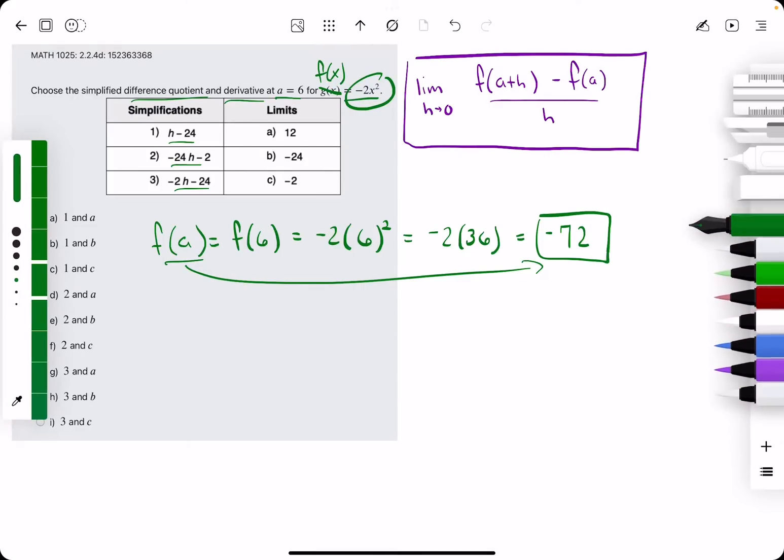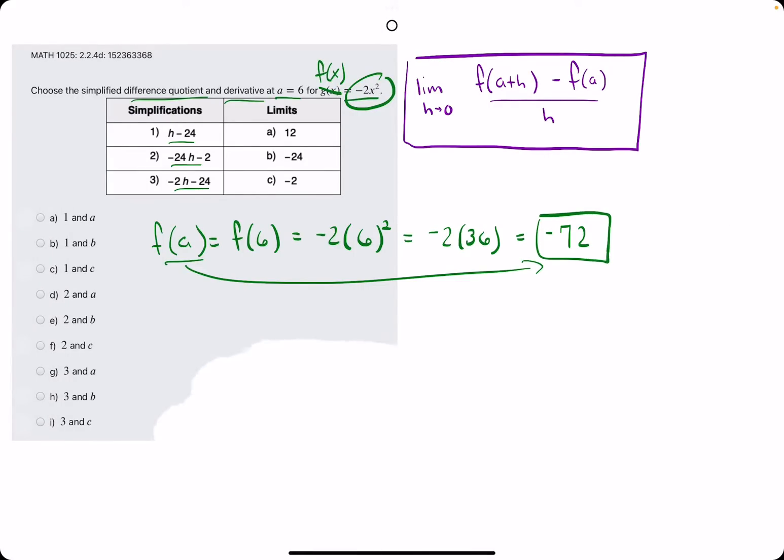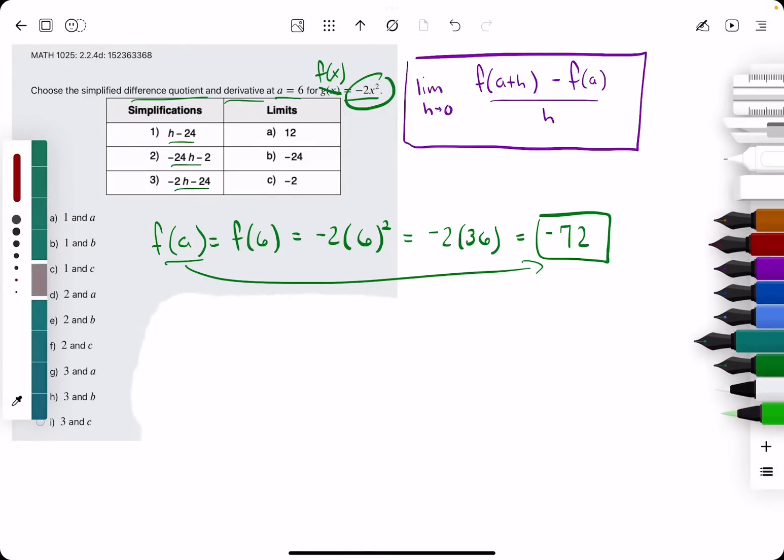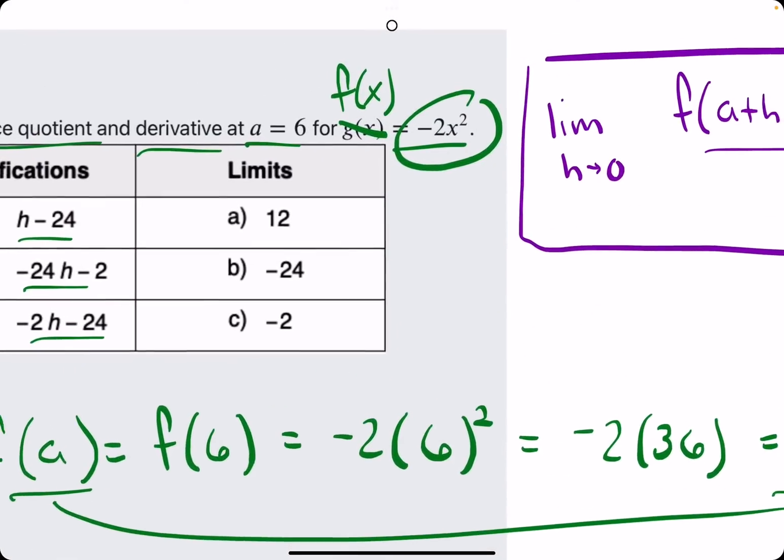Let's go ahead and work out f of a plus h. I'm going to wipe out some of this space to make it a little neater. Go ahead and do f of a plus h. f of a plus h is really to find f of 6 plus h, since a is equal to 6.